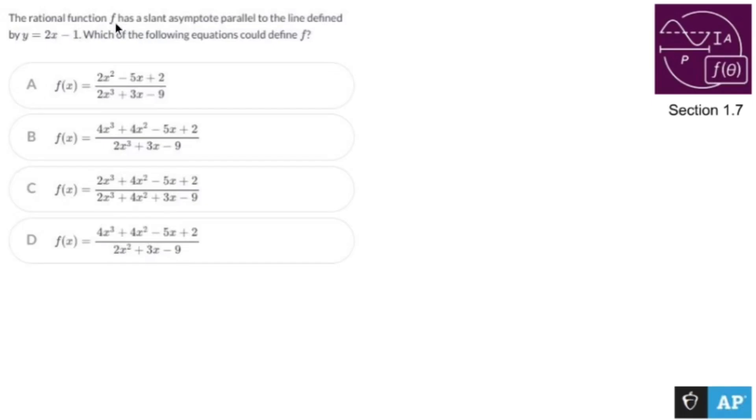The rational function has a slant asymptote parallel to the line defined. First things first, if it has a slant asymptote, then what we have is a rational function. It wants to give us f of x, and whatever the degree is in the numerator is going to be one more than whatever the degree is in the denominator.